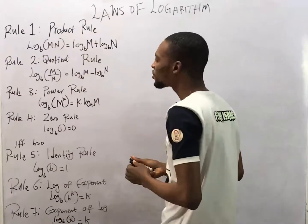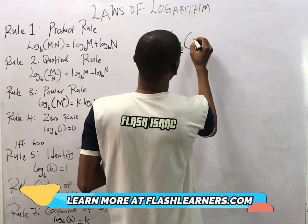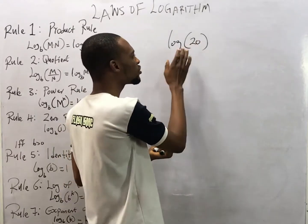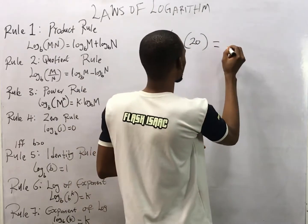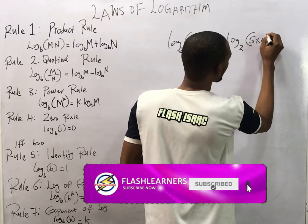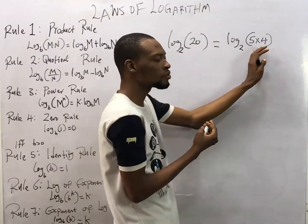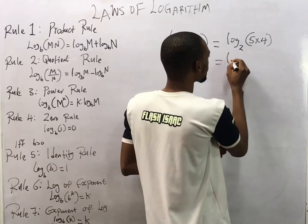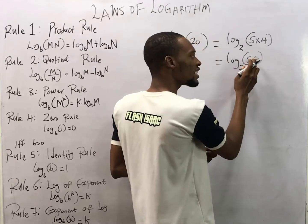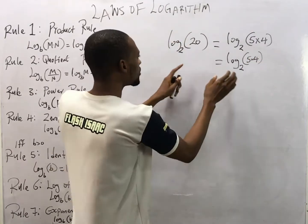The first rule is the product rule. It states that if you have something like log base 2 of 20, this is the same thing as log base 2 of (5 times 4), or log base 2 of (10 times 2) — anything you can break down to give you 20. The dot here represents multiplication, not a decimal point.